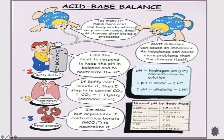The acid-base buffer system illustration shows three lines of defense: hydrogen ions respond first; if the buffer can't handle it, the respiratory system steps in; then the renal system — slow but dependable — acts last. Small pH changes can alter biological processes. Most diseases can cause an imbalance, and the imbalance can cause more problems than the disease itself. This topic is introduced here but will be covered in greater depth in medical-surgical nursing courses.